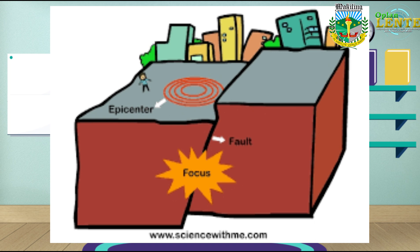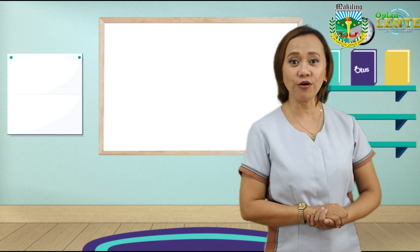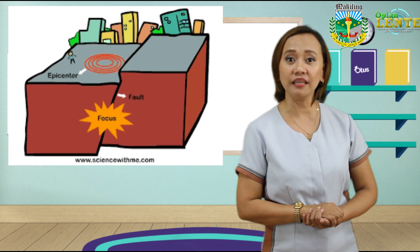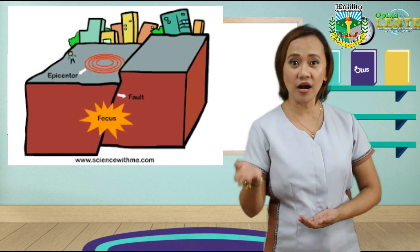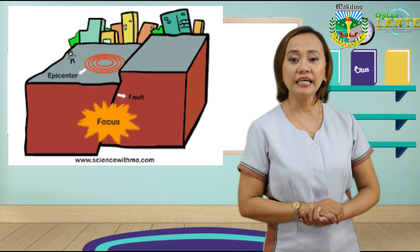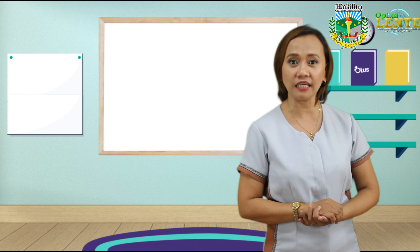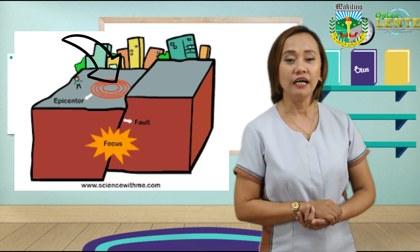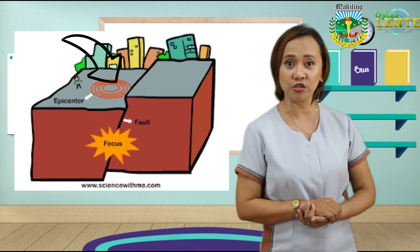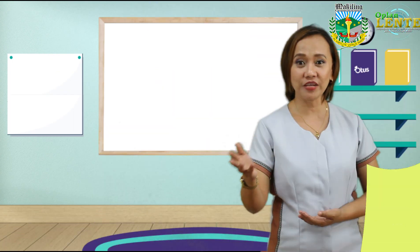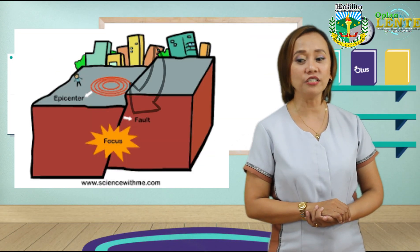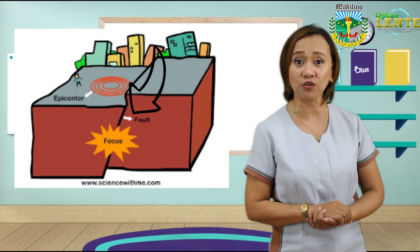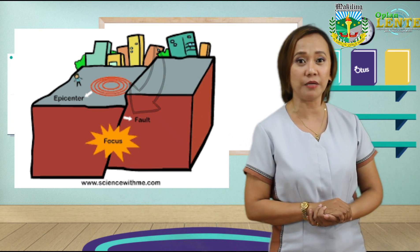It has three main important parts. 1. The focus or hypocenter is where the earthquake begins. It is located underground. 2. The epicenter is the point of the ground directly above the focus. It is where the earthquake vibrations reach first and the most violent shaking occurs here. 3. A fault is a weak point or geologic fracture on the tectonic plate where pressure within the crust is being released.